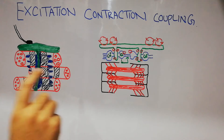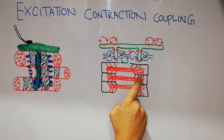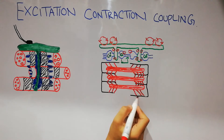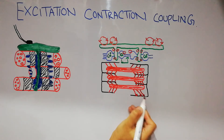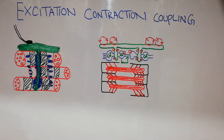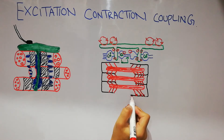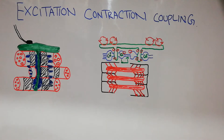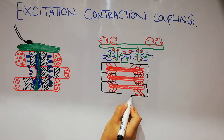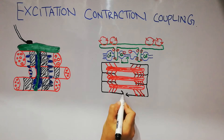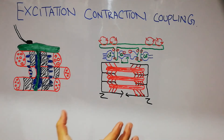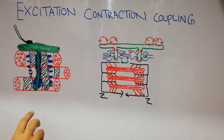The contraction process occurs only when a lot of calcium comes in and combines with the head of the cross bridges. Here is the cross bridge and here is the head of the cross bridge. When calcium combines with the head of the cross bridge, the cross bridge moves and in turn moves the actin. The actin moves, the area between two Z-lines — the sarcomere — decreases, and that results in contraction.